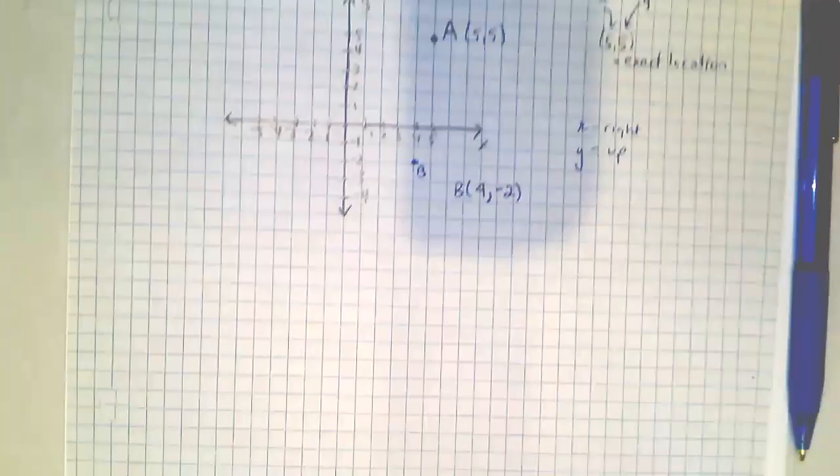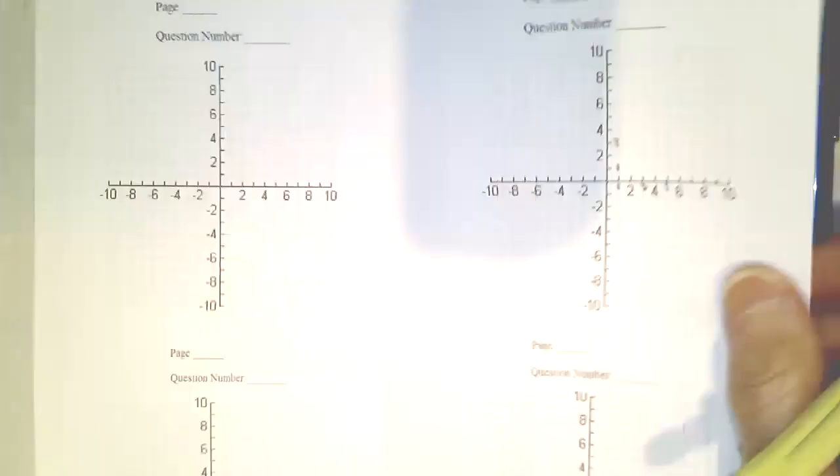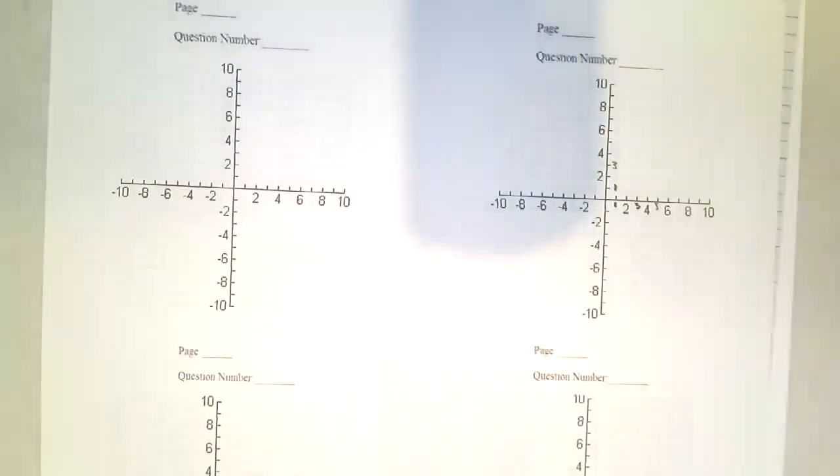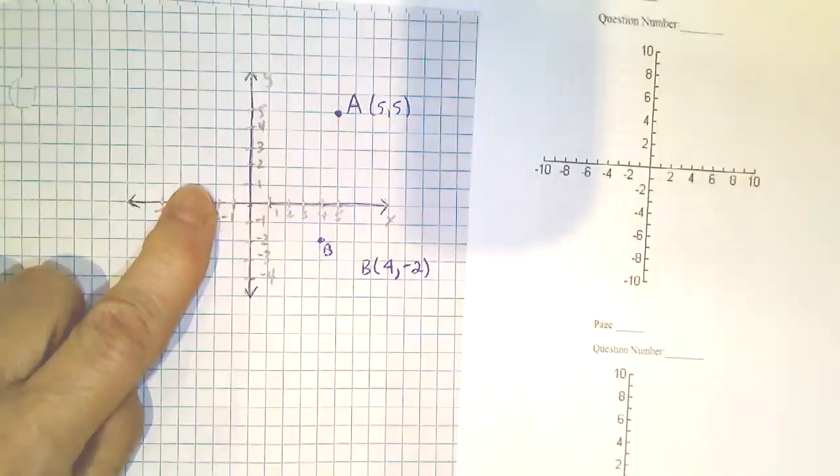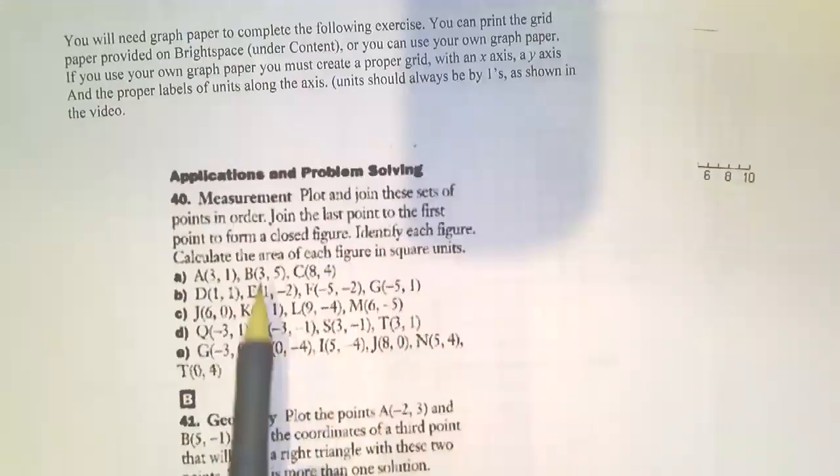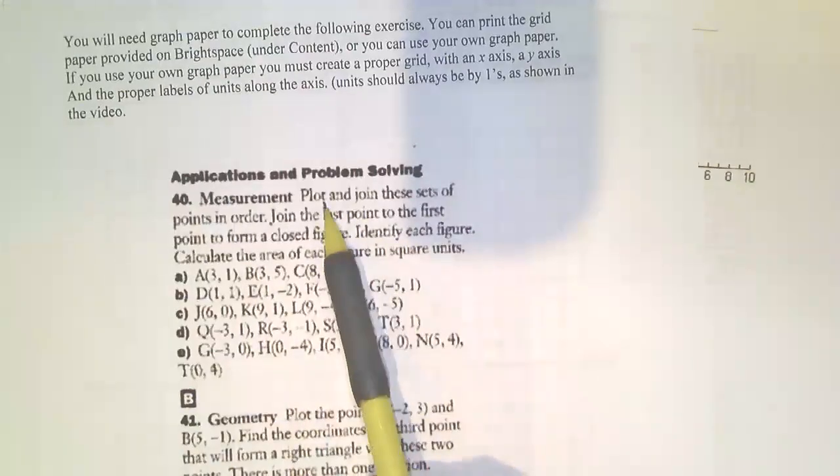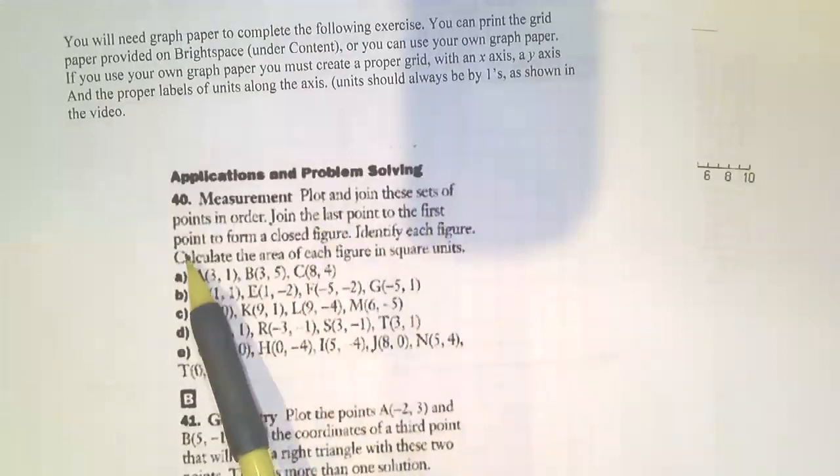The second skill, probably best to do it on this graph paper if you can print it. If you can't print it, you have to make your own grid and you can make a small grid. Now in this question, it looks like this, number 40, it says plot and join these sets of points in order. So I'm going to do an example here where I'm going to say A is the point four negative six.